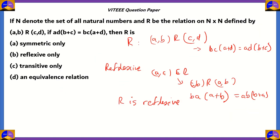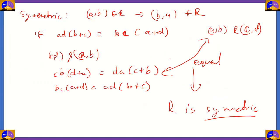So we've seen that R is both reflexive and symmetric. This means options A, B, and C are incorrect since they each say the relation has only one of these properties. The only option that works is option D, an equivalence relation. However, for a full equivalence relation, R must also be transitive. Let's verify transitivity.